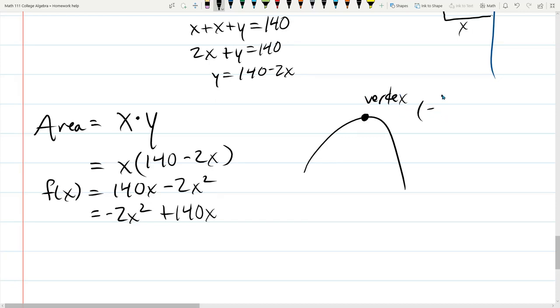And remember, the vertex is negative B over 2A, f of negative B over 2A. So we just need negative B over 2A. So here is our quadratic. There is no C. So I'm just going to write a plus zero for C so we don't forget it.